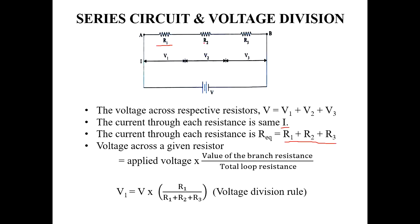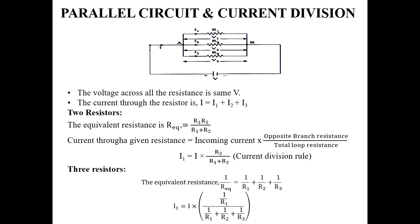In a parallel circuit, this is opposite to the series circuit — voltages are the same but currents are different. The best example of a parallel circuit is house wiring. If one bulb is broken or damaged, the other bulbs will still glow, because each branch is independent.